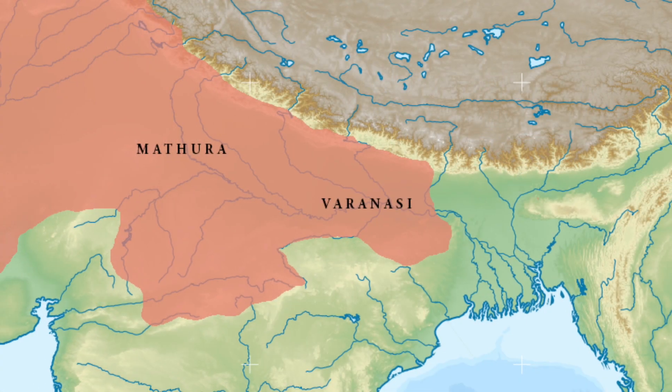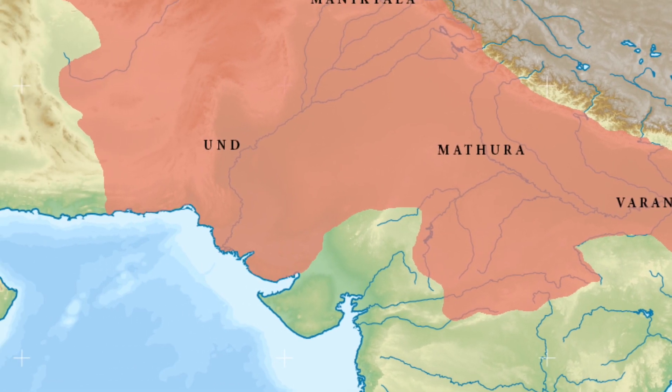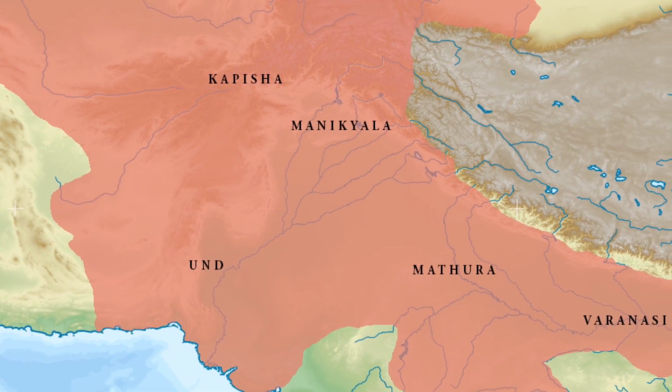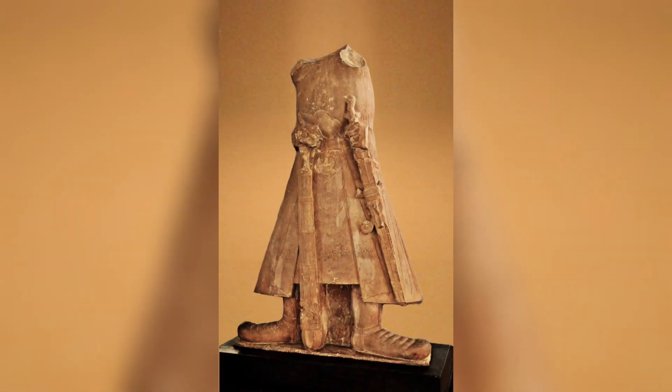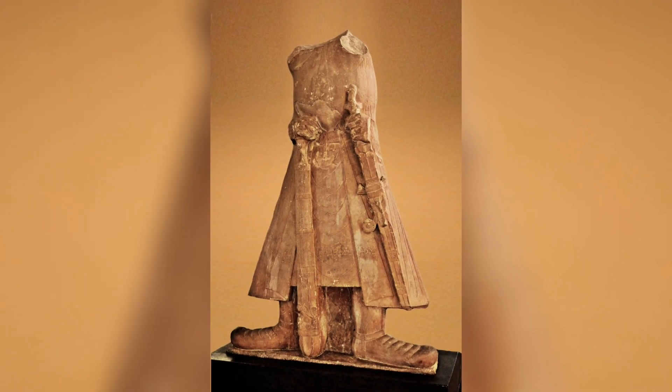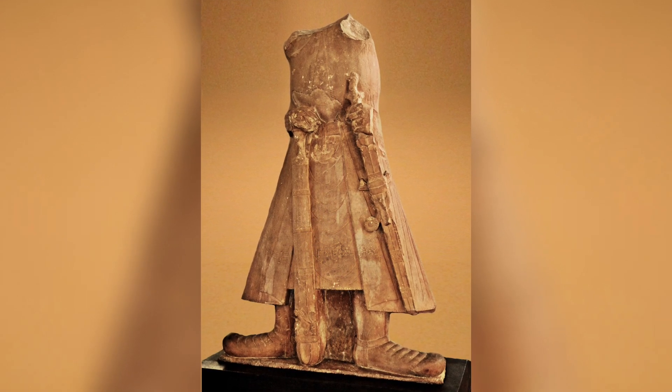Although the Kshatraps were under the control of the Kushana kings, they enjoyed great powers. According to Professor B.N. Puri, Kshatrapies were spread throughout the empire, including Varanasi, Mathura, Undh west of the Indus, Manikkela near Rawalpindi, and Kapish in Afghanistan near Kabul. Kanishka's reign lasted around 23 years, and his accession marked the beginning of a new era. His reign ended around 152 AD.